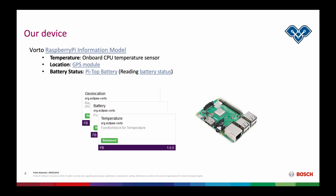Talking about this information model, it's basically set up for a Raspberry Pi that also has a GPS module and a Pi top battery connected. Therefore, we have to have three different function blocks, which are indicated with this FB and color on the Voto repository. And I've already connected and integrated this device beforehand.